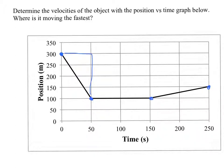So the rise goes from 300 to 100, so it's a change of negative 200. And from 0 to 50, it's a change of 50 seconds. So it's negative 200 over 50, or negative 4 meters per second. So in this region here, the object has a velocity of negative 4 meters per second.